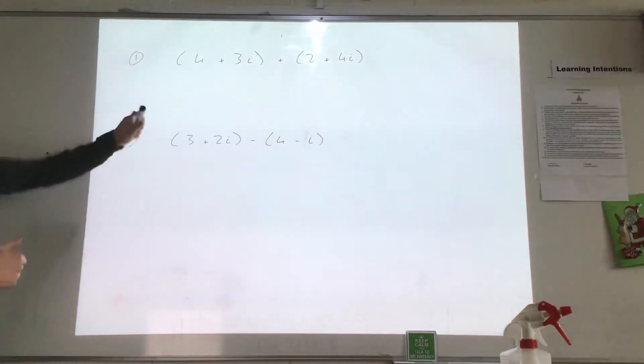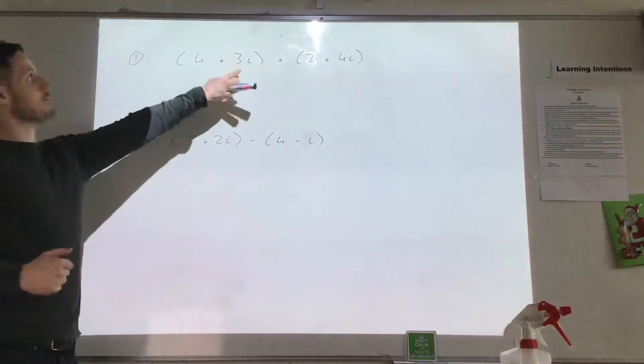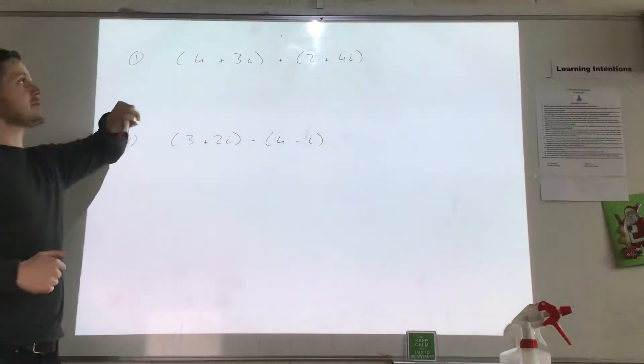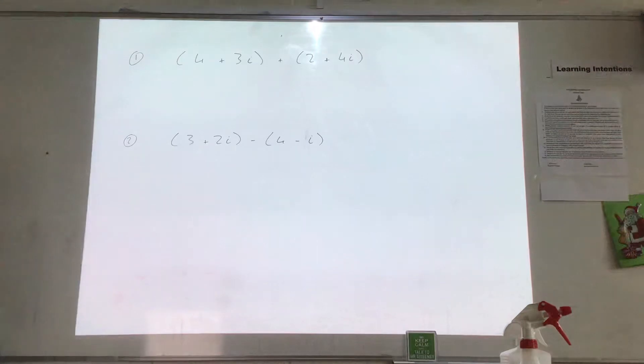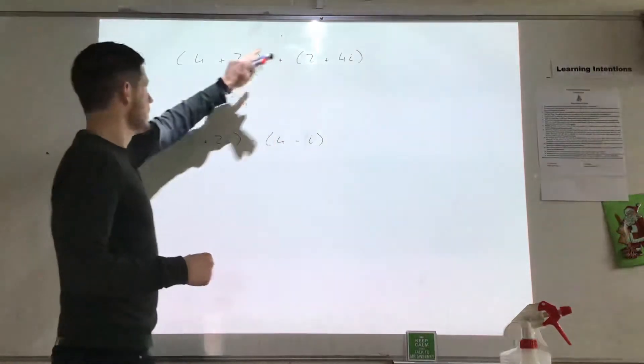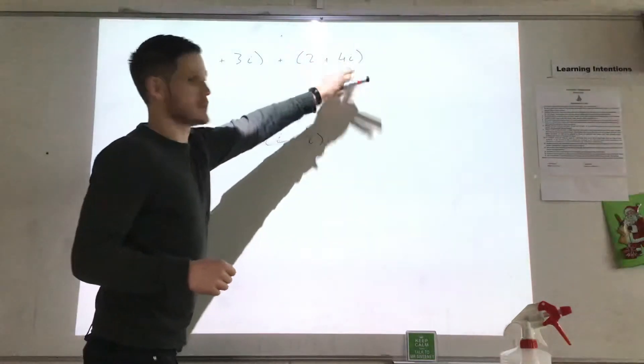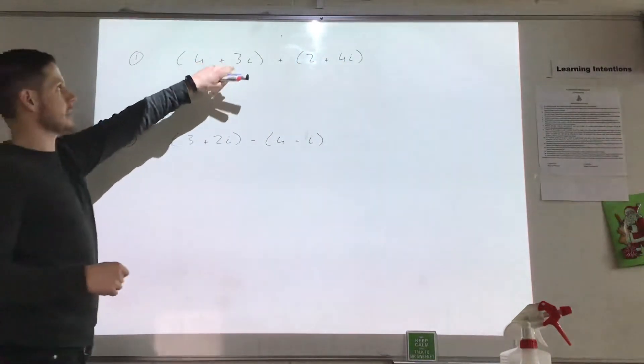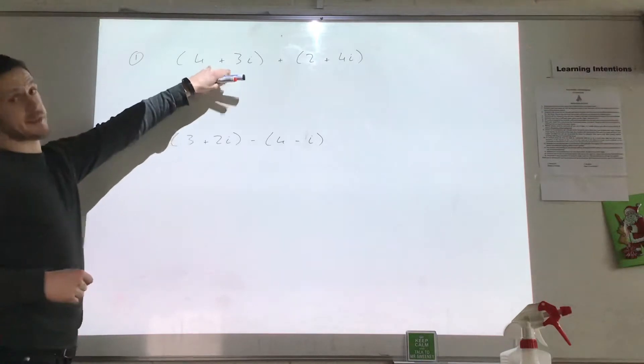So we have two types of numbers here: real numbers and imaginary numbers. Imaginary numbers have the i in front of them. And all we need to know is that we can add real numbers to real numbers and imaginary numbers to imaginary numbers, but we can't add things that are different.